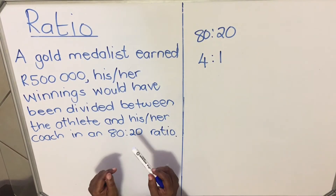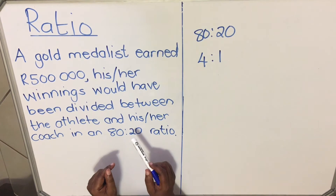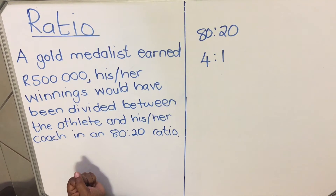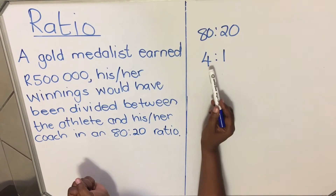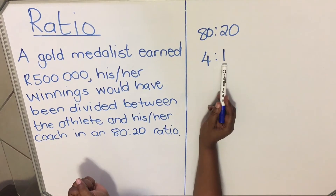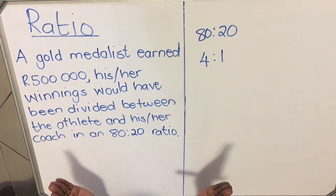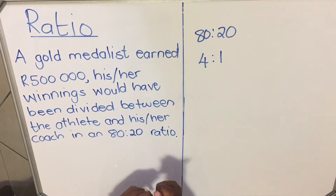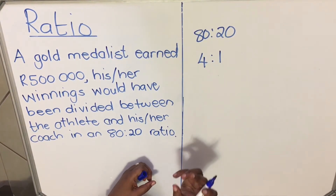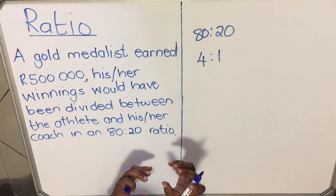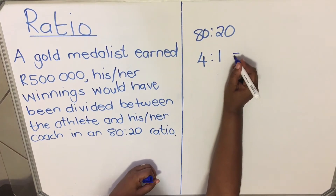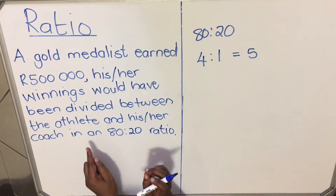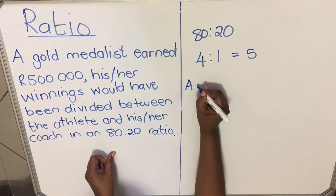Now that we have simplified the ratio, let's see how much the athlete gets out of 500,000 and how much the coach gets. If the ratio is 4 to 1, the total money is divided into 5 pieces. You add the ratio values to get the total number of portions — so it will be divided into 5 portions.